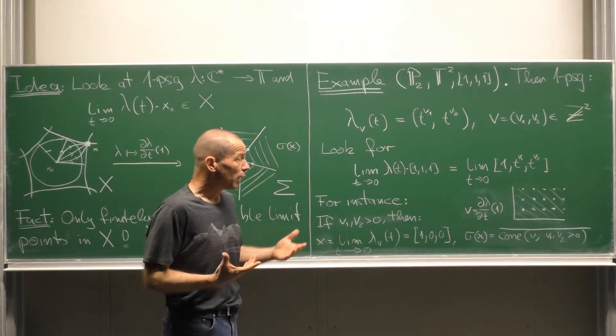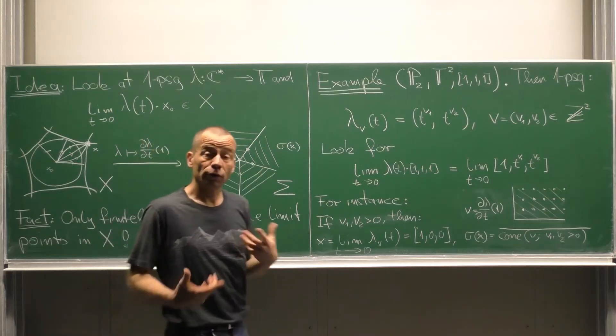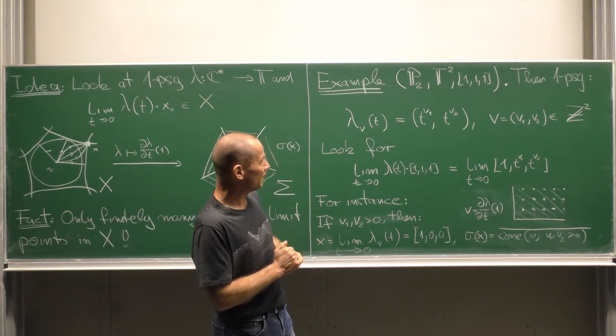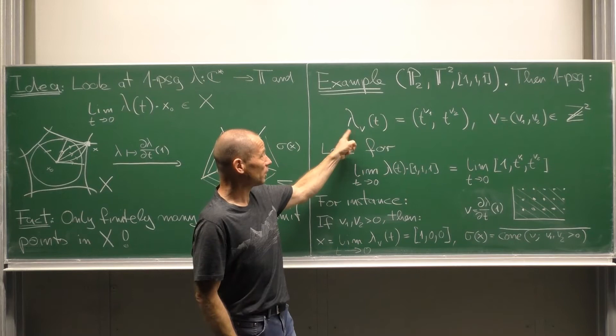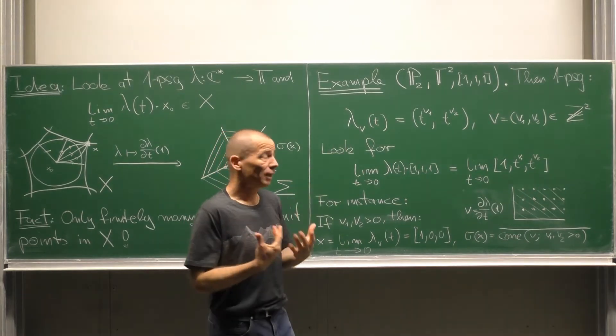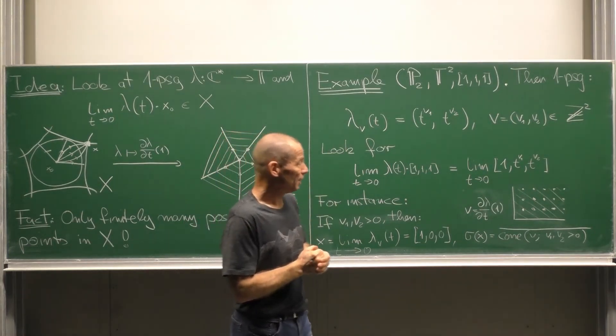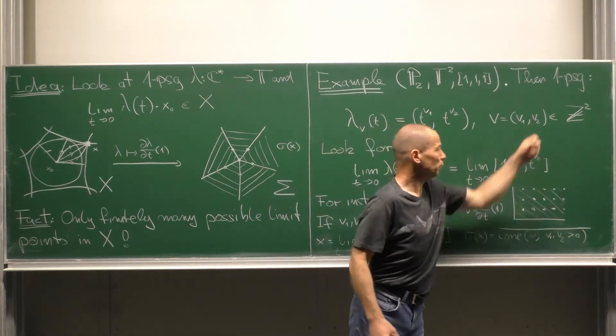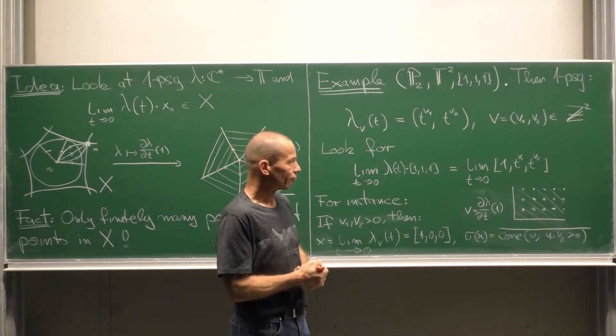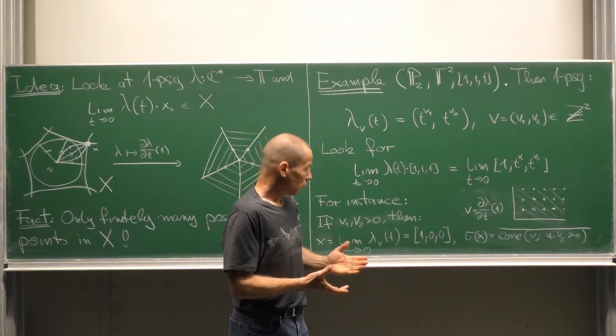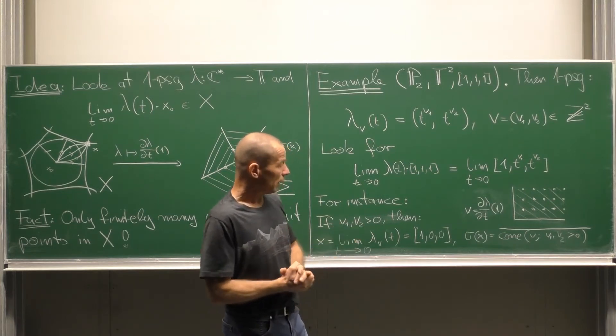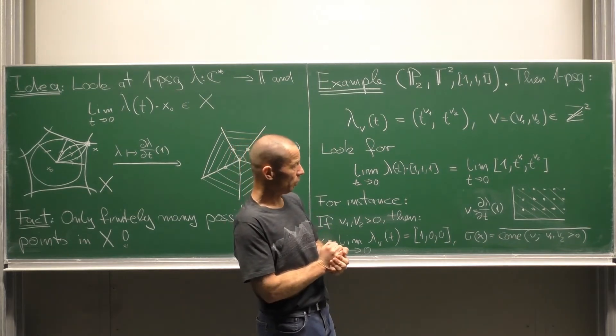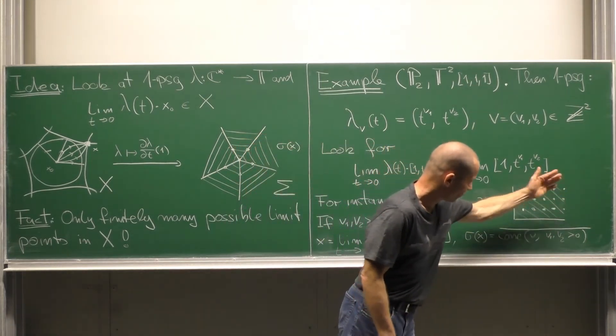Now remember we have to pass to the derivatives of these one parameter subgroups. What does it mean in our case the derivative of such lambda V at point 1? This gives us just back the vector V1 V2. So if we draw all the lambda V having this as a limit point into a picture we get these lattice vectors.